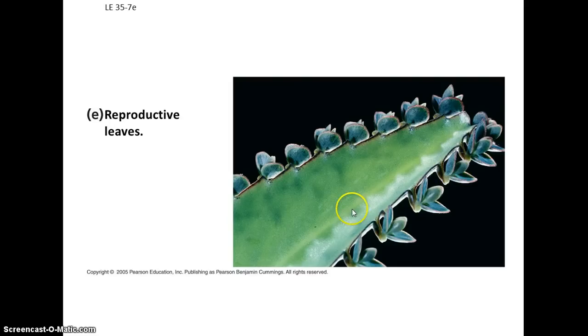Sometimes leaves take on a reproductive role. In this case with the kalanchoe, we have some kalanchoes in the classroom where on the margins of the leaf you have these little plantlets that develop and will fall off. This is a form of asexual reproduction.